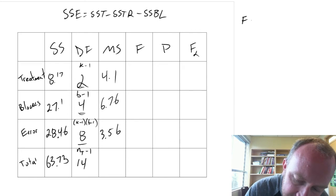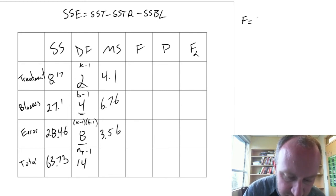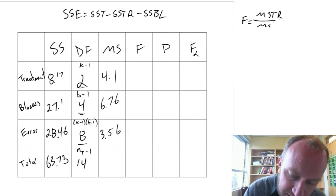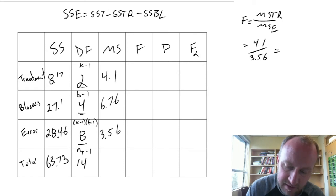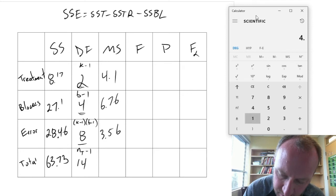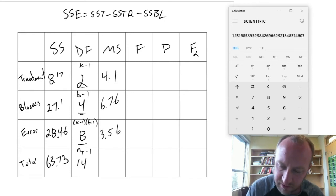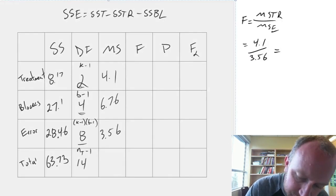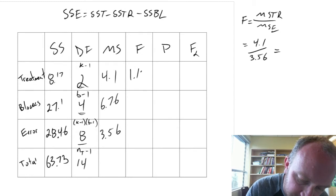Now our F statistic is going to be MSTR divided by MSE. So this is 4.1 divided by 3.56. Oops. Okay. 4.1 divided by 3.56. 1.15. 1.15. Good.